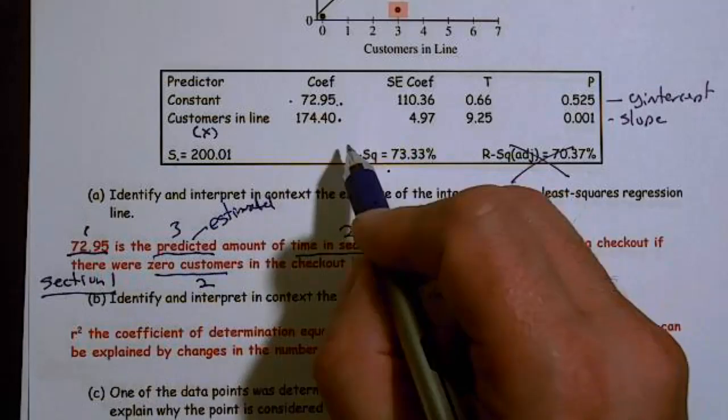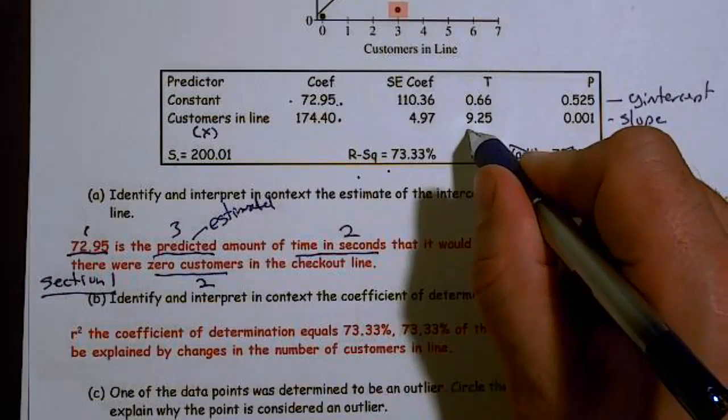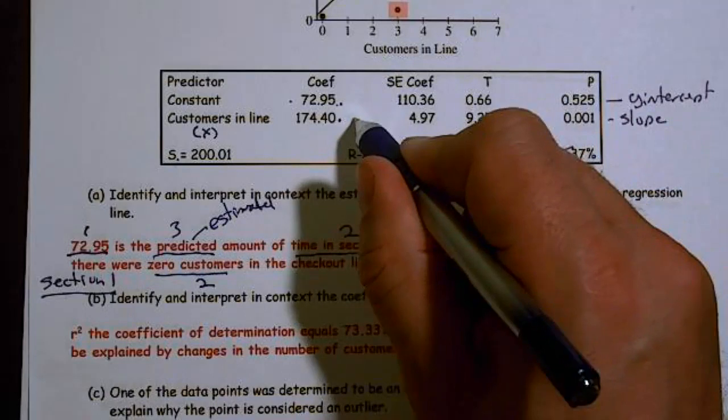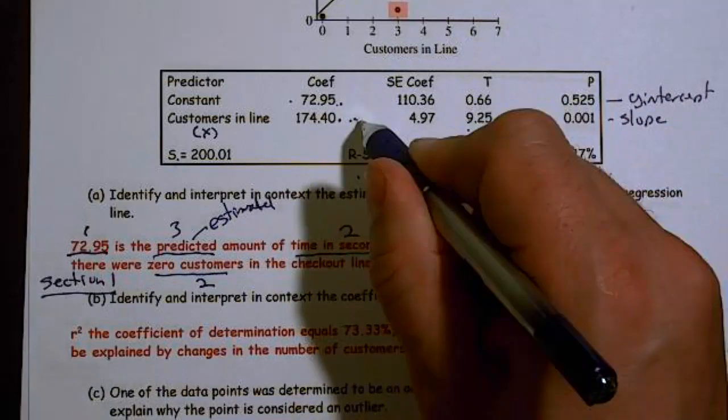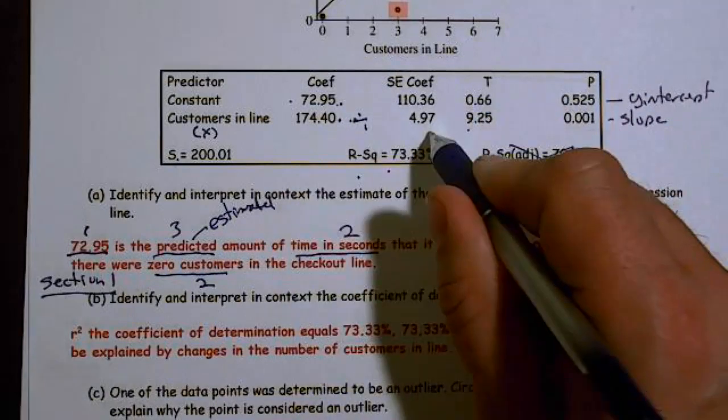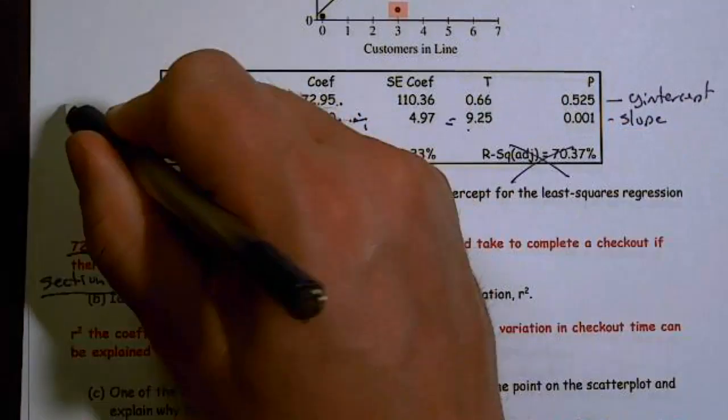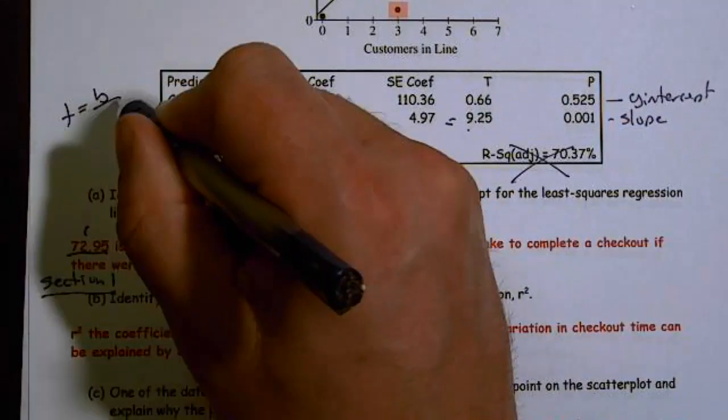So R squared adjusted is just there as a distractor. Please remember, this is my T statistic, which is found by taking the slope divided by the standard error of the slope. So T equals B over SB.